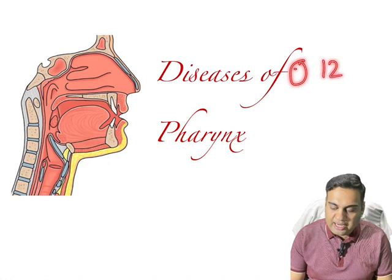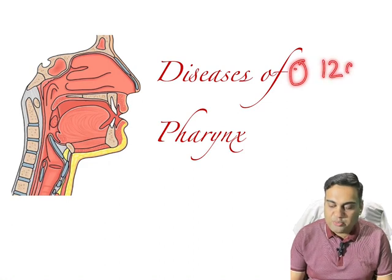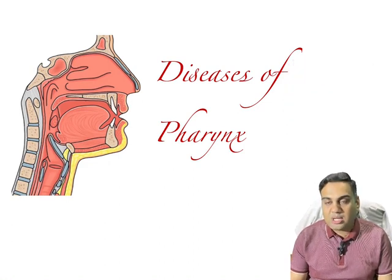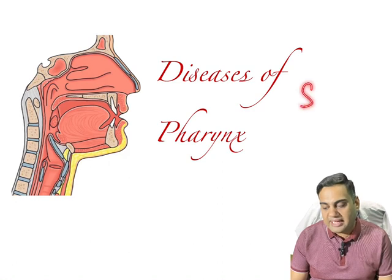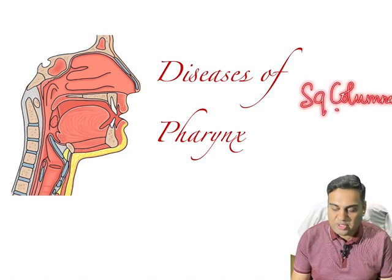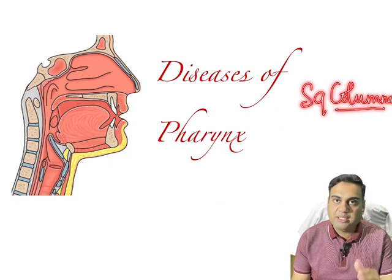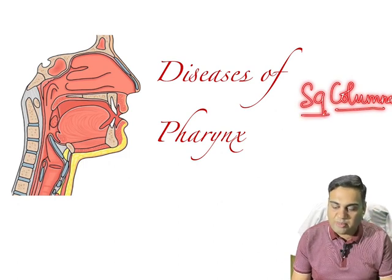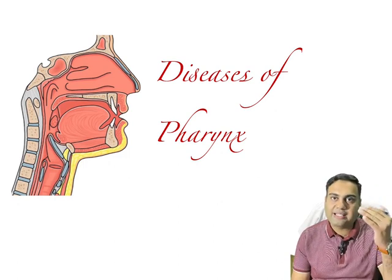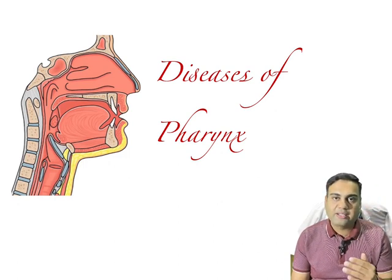Number one, the entire pharyngeal tube is how much? 12 centimeters. Number two, what is the important lining epithelium — the squamo-columnar junction? If you remember this, you will know there is columnar epithelium in the nasopharynx and squamous epithelium in the oropharynx and laryngopharynx.